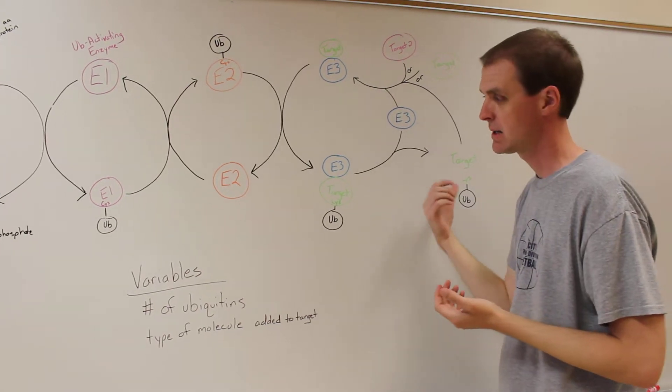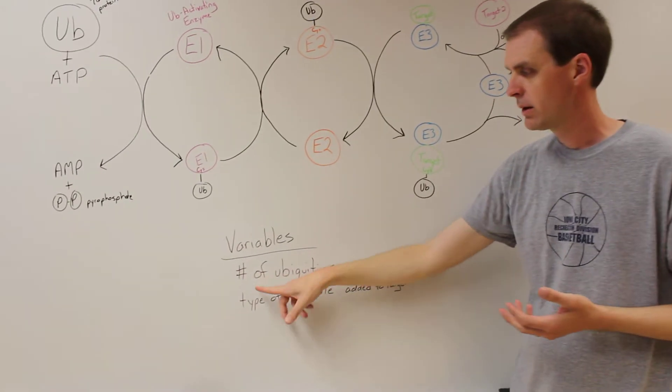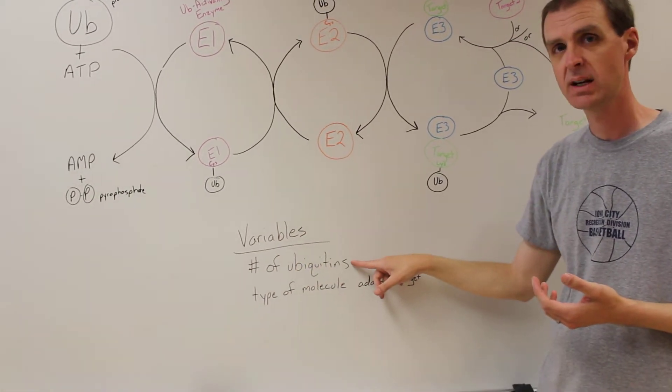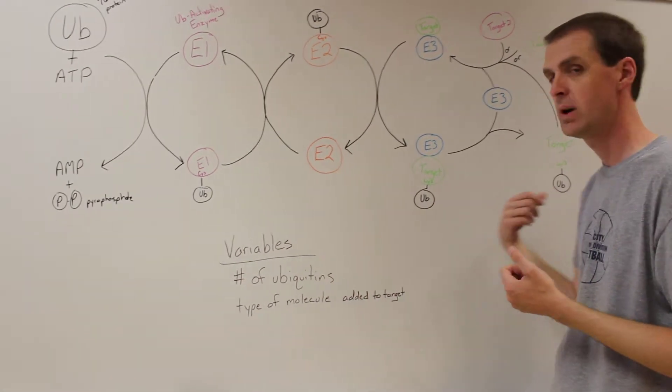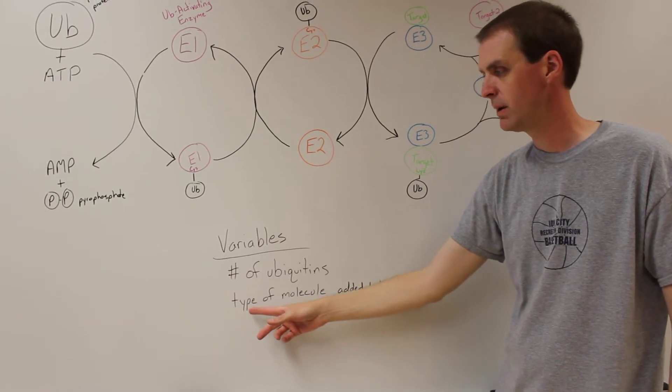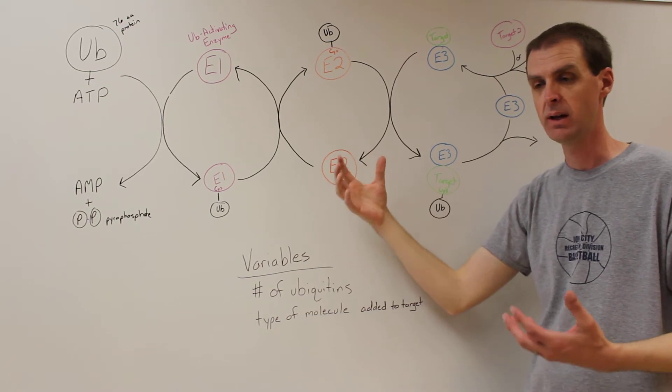So we'll have follow-up videos talking about the ubiquitin ligase system. There's a number of variables to mention and that is the number of ubiquitins that could be put on the target can be different. Sometimes it's just one, sometimes it's a string.